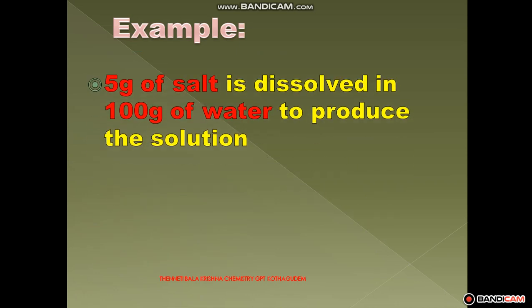Next, an example for solute and solvent: we take 5 grams of salt dissolved in 100 grams of water to produce a solution. The salt is completely dissolved — we cannot identify one component from the other. This is an example of a solution prepared using two components, making it a binary solution. One component is called solute and the other is called solvent.